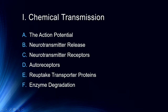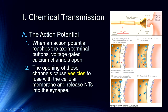The action potential is an electrical signal that is generated or propagated along the membrane of a neuron by the opening and closing of ion channels. When that reaches the axon terminal buttons, voltage-gated calcium channels open, and those calcium channels are important because as calcium enters the cell, that causes vesicles to fuse with the cellular membrane and release neurotransmitters into the synapse.